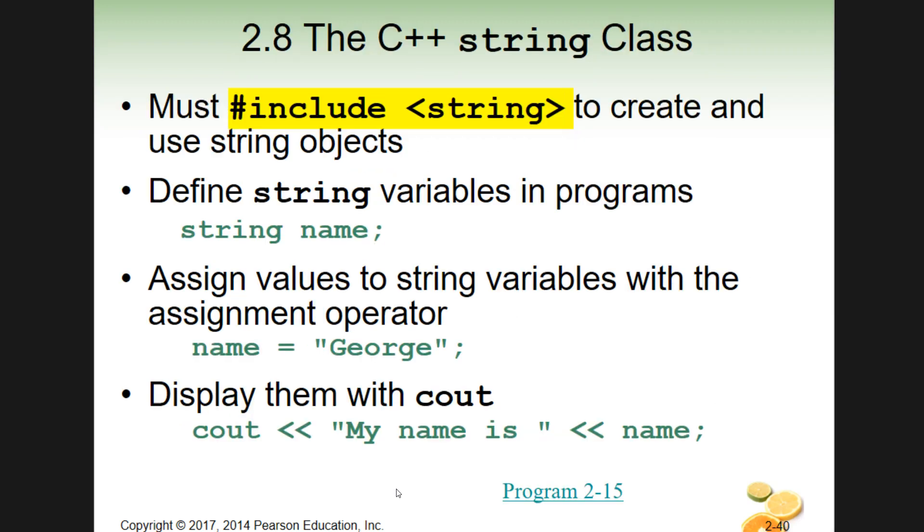All right, so let's take a look really quickly at 2.8. It's the only slide I have for the 2.8 section, so the string class. All right, so we've seen strings, but we have to have a new hashtag include if we're going to use them like we've been using variables like ints, right? So if you see this in here, so here's our, we're defining a string and we're saying hey, we're going to name this name.